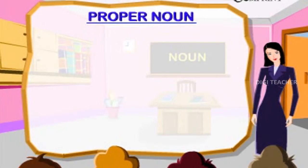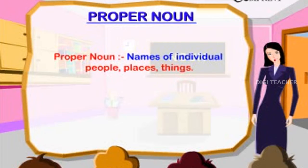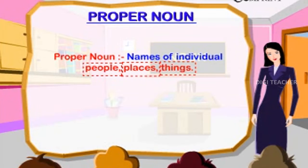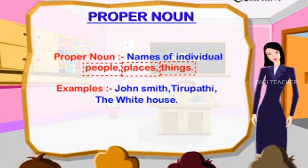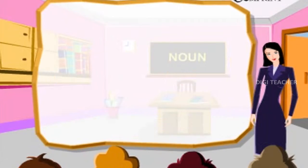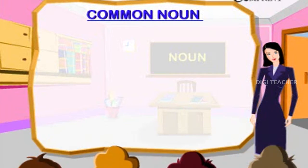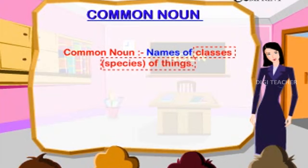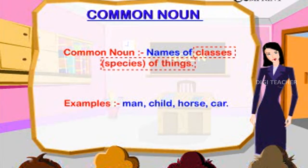Proper Noun: names of individual people, places, and things. Examples: John Smith, Thirupati, The White House. Common Noun: names of classes of things. Examples: Man, Child, Horse, Car.